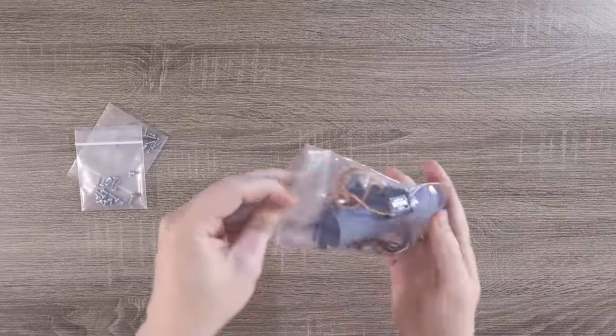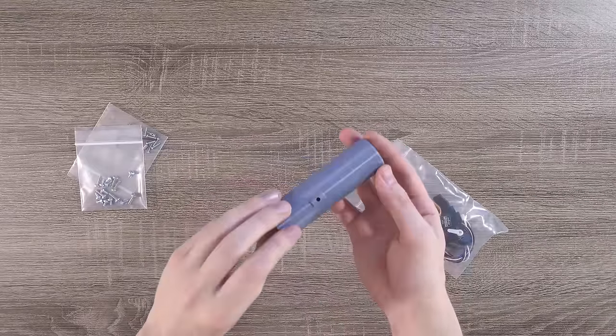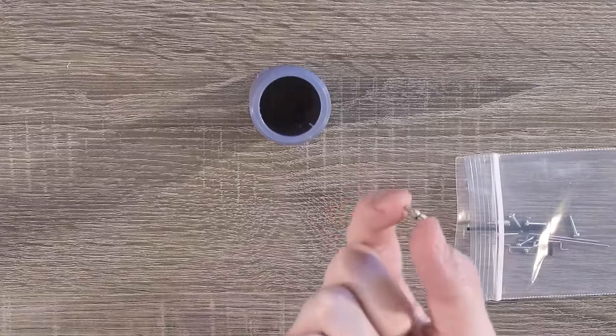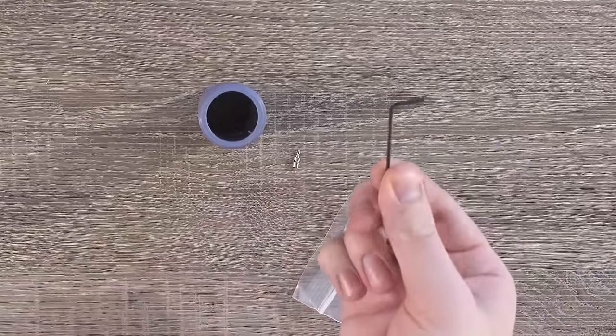To start assembling your thrust vectoring mount, grab the motor tube out of this bag. Then take one of the tiny silver linkage stoppers out of the small parts bag, as well as the 1.5 mm hex wrench.